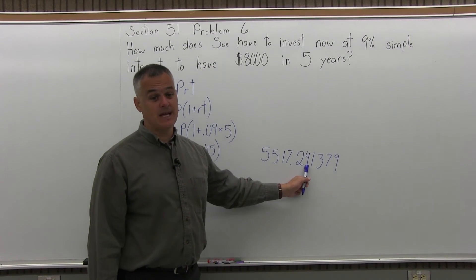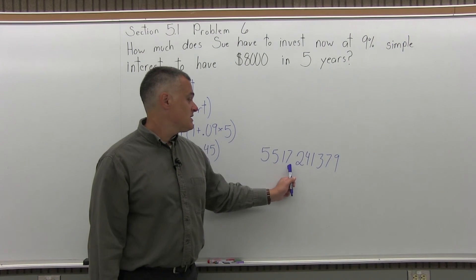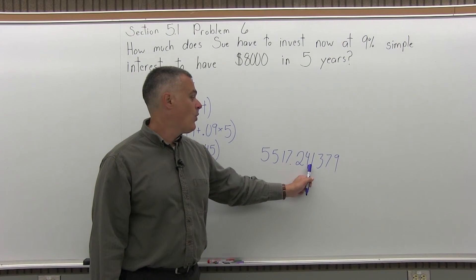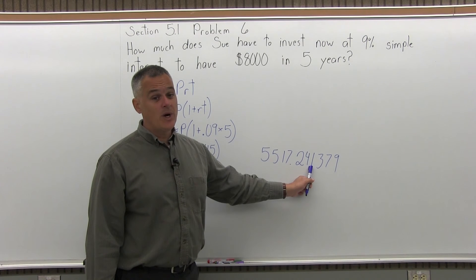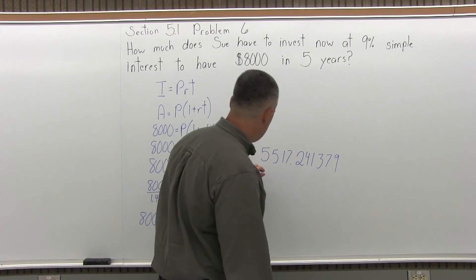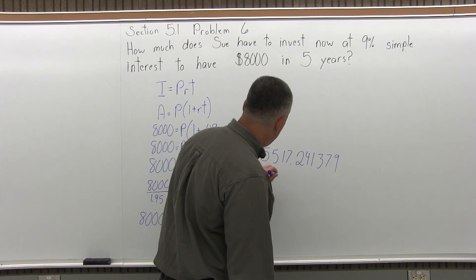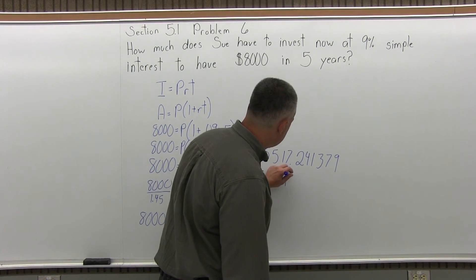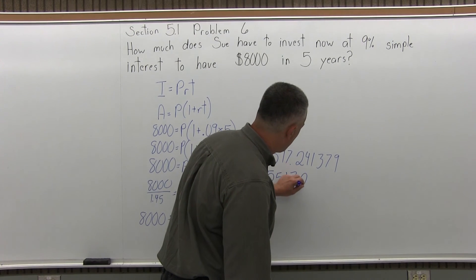So after the decimal, I have .241. So the 1 is not big enough to bump this up to 25 cents. So my answer is going to be $5,517.24.